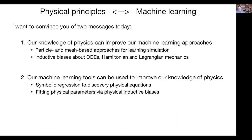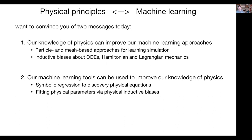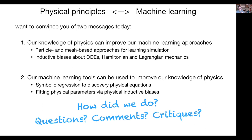So to summarize, we can discover symbolic equations from real observations. I wanted to convince you of two things: that we can improve our machine learning by exploiting knowledge of physics, and that we can improve our knowledge of physics by exploiting machine learning. Thanks a lot for your attention — sorry I went a few minutes over. A lot of this code is open source, and you can find collaborators and references on the closing slide.